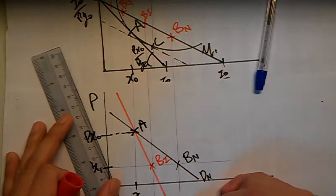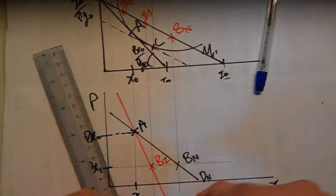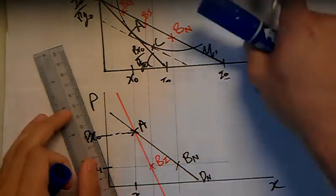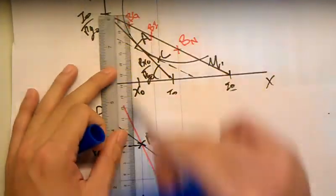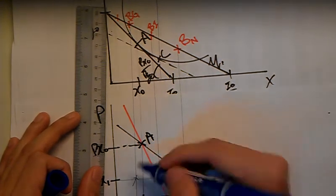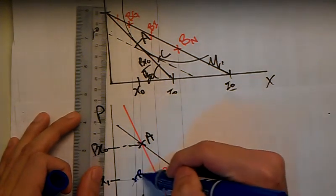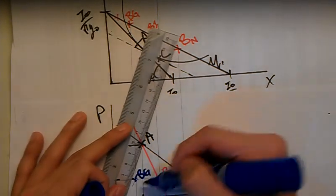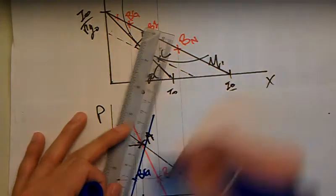What if it's a Giffen good? Same thing—from here, draw a line down. You get this new point over here, B. If it's a Giffen good, then you draw the line across and you get the demand curve for a Giffen good.